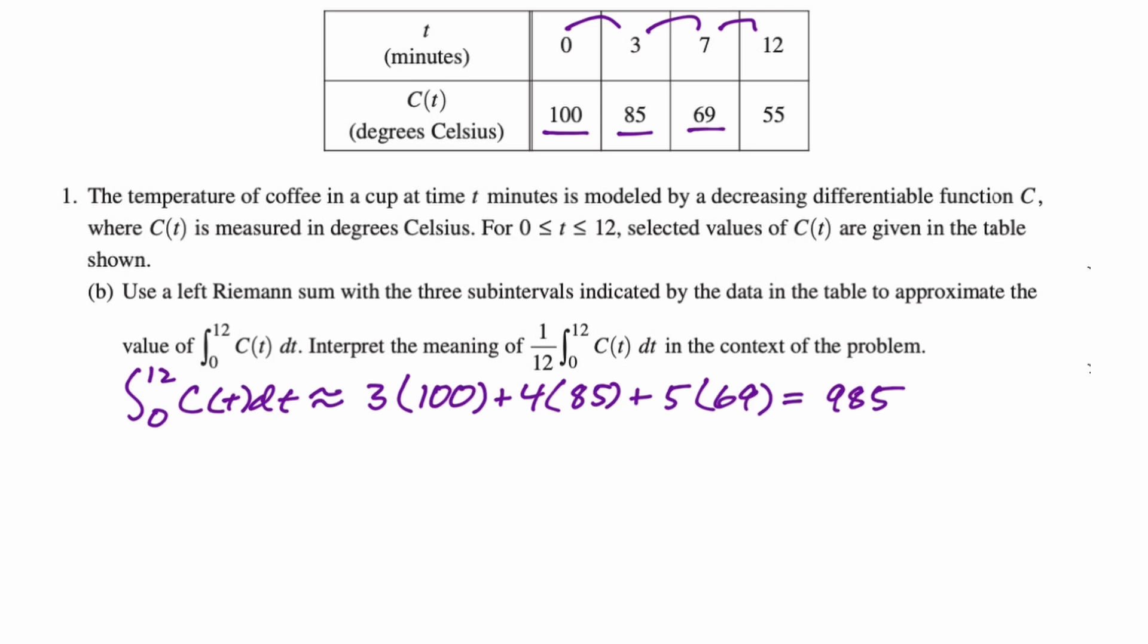Now what we need to do is interpret the meaning of this thing. So the integral from, I'm sorry, 1/12, the integral from 0 to 12, C(t) dt, is definitely the average value of C(t). So that's going to be the average temperature of coffee in the cup. So let's write that. So this integral is the average temperature.